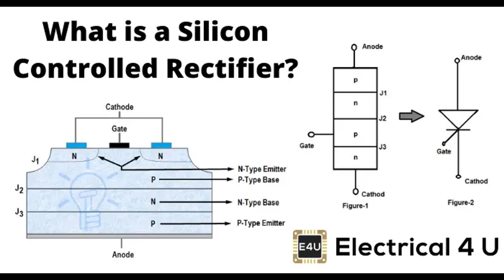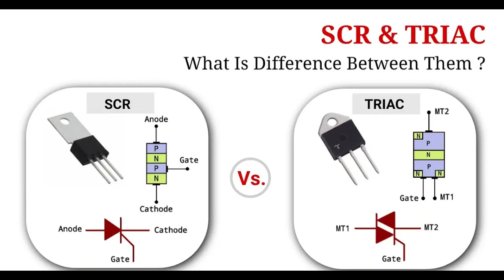An SCR is a four-layer semiconductor device with alternating P-type and N-type layers, forming a PNPN structure. It has three junctions: J1, J2, and J3.